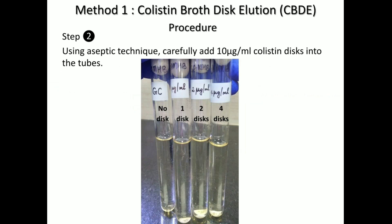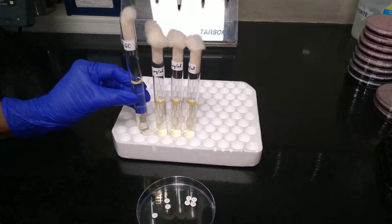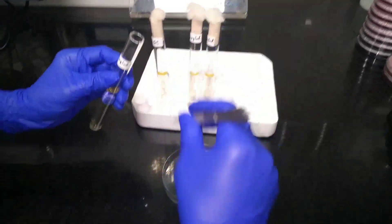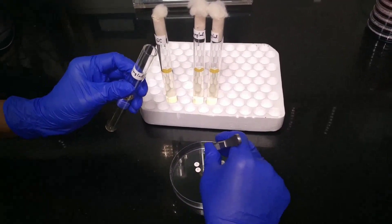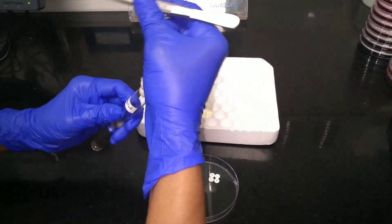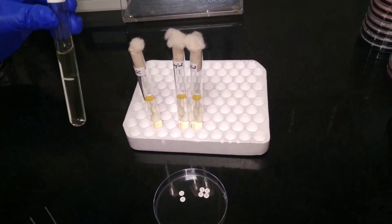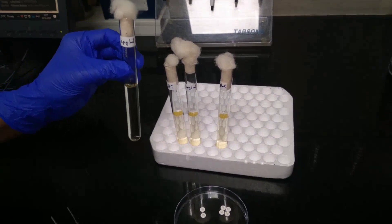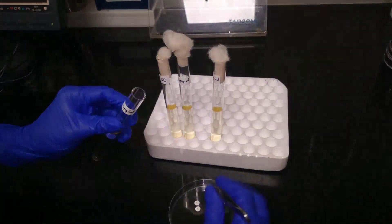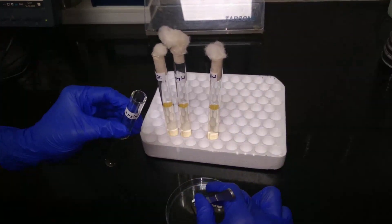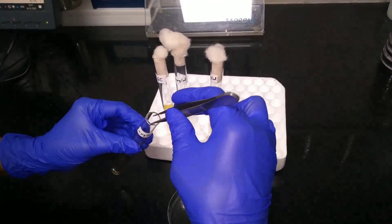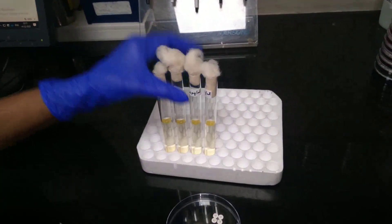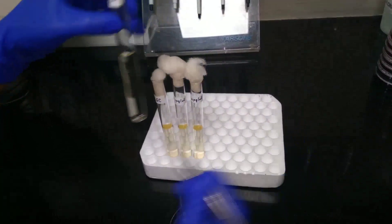Next we set up the discs. The growth control tube should not contain any disc. Into the tube labeled 1 microgram per ml, place 1 colistin disc in a sterile manner and shake well. Add 2 discs of colistin sulphate into the tube labeled 2 microgram per ml. Into the last tube labeled 4 microgram per ml, add the remaining 4 discs. So you have totally added 7 discs.